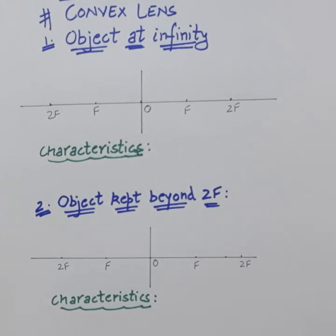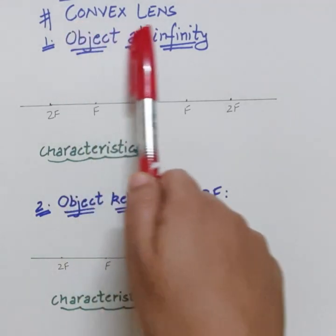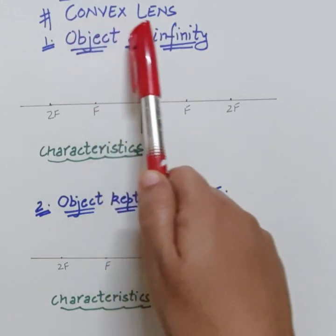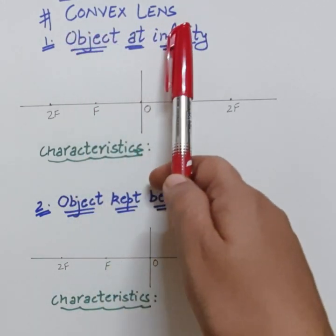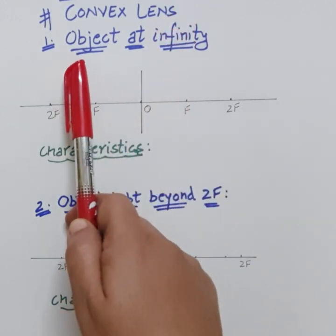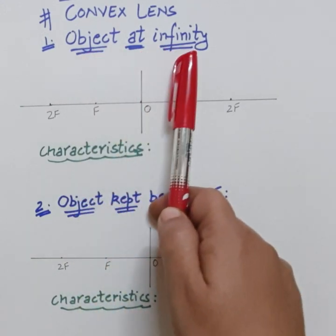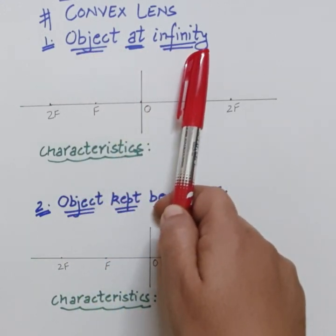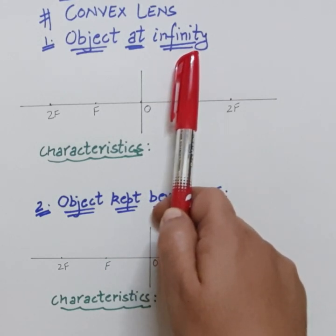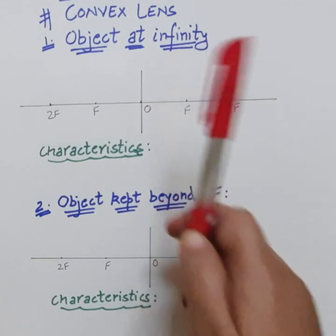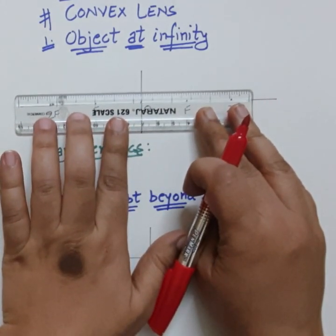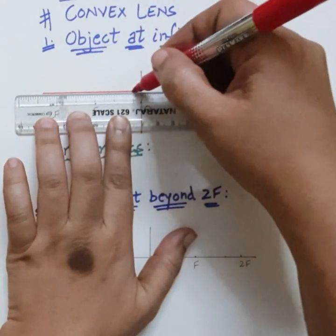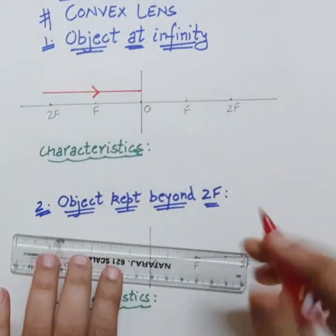In this video we will learn how to draw images when the object is kept in front of a convex lens. We will keep the object at different positions in front of a convex lens. In total there will be six different images formed. The first position is when the object is kept at infinity, meaning the object is at a very large distance, and the rays coming from infinity are parallel rays.